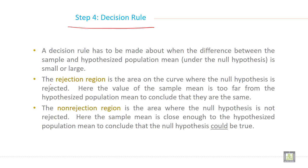The rejection region is the area on the curve where the null hypothesis is rejected. Here the value of the sample mean is too far from the hypothesized population mean to conclude that they are the same.